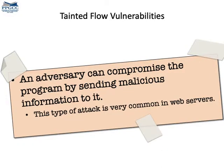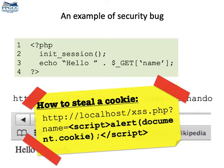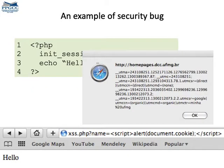We will illustrate tainted flow attacks with an example. In this example, an adversary can compromise the behavior of a web-based program. The target program is very simple — it's just a PHP server that echoes the name in the URL. You can see how it works in this figure. Now imagine that a user passes the following string as a name in the URL. In this case, the program will generate a web page that prints information about the cookies stored in the user's local environment.